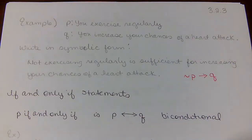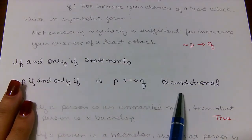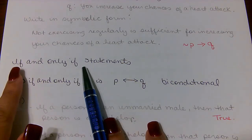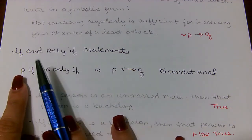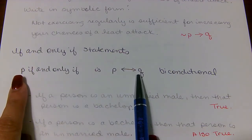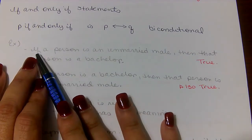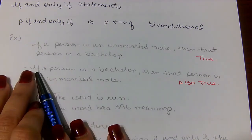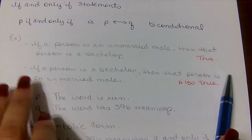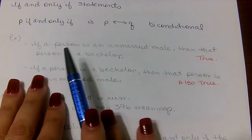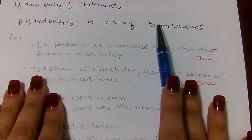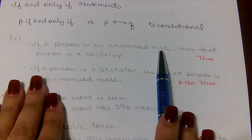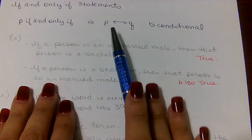Next we're going to look at the biconditional, stated by 'if and only if.' This is a conditional statement that has to go both ways. For example: if a person is an unmarried male, then that person is a bachelor — true. And if a person is a bachelor, then that person is an unmarried male — also true. When both directions are true, we can use the biconditional: a person is an unmarried male if and only if that person is a bachelor.